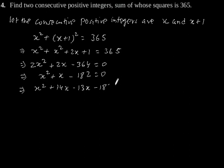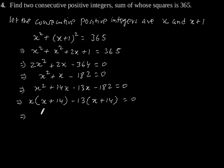This implies, taking x common, x(x + 14) - 13(x + 14) = 0, which implies (x + 14)(x - 13) = 0.